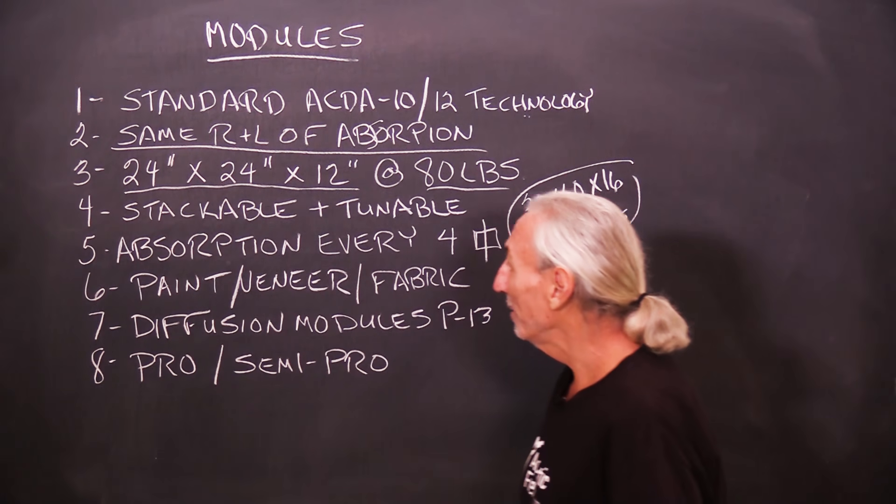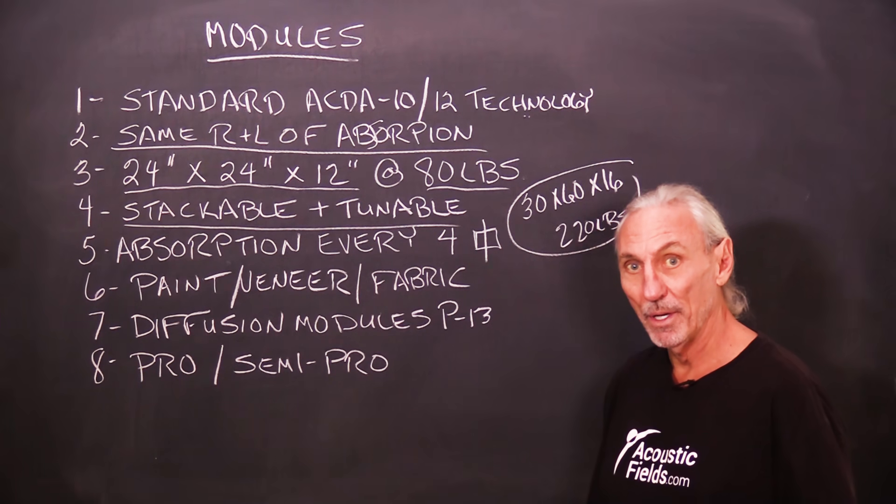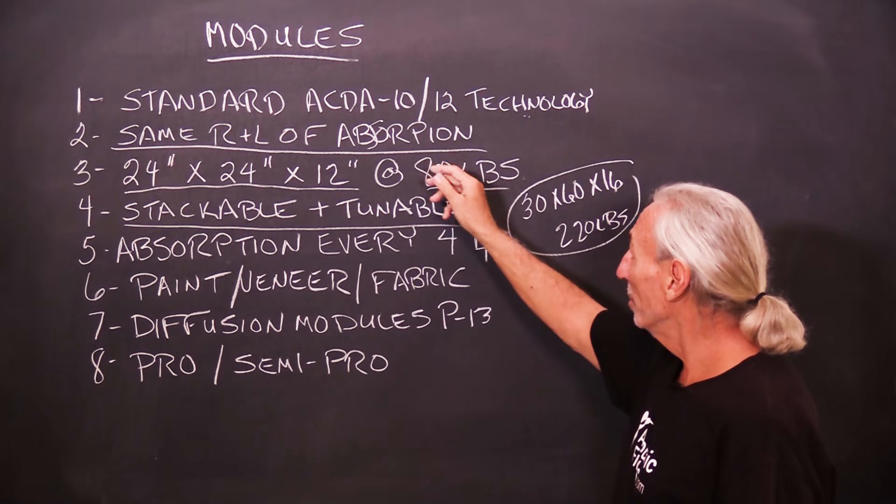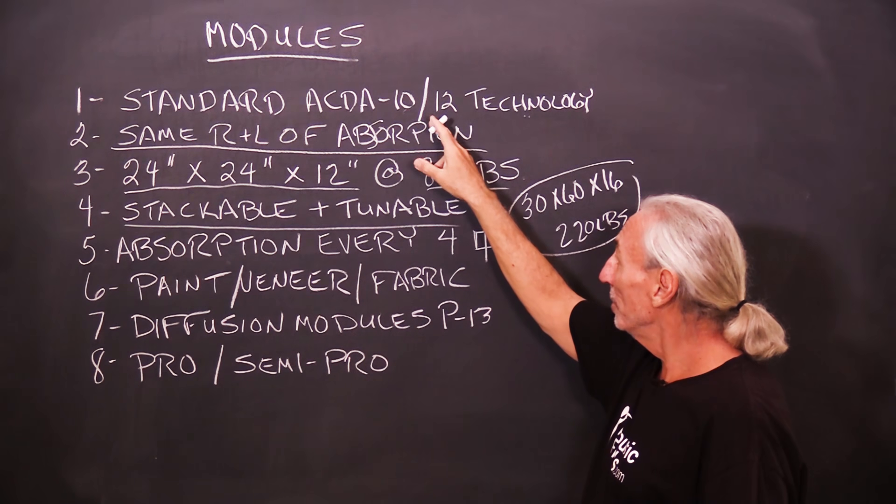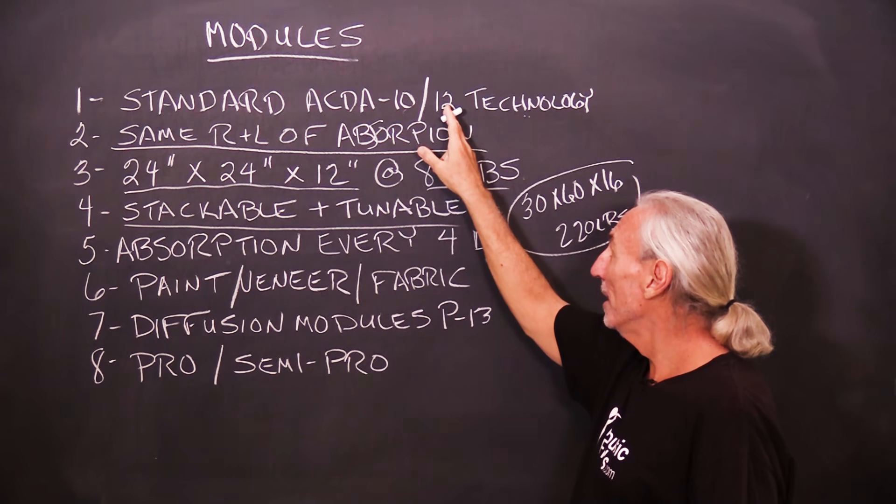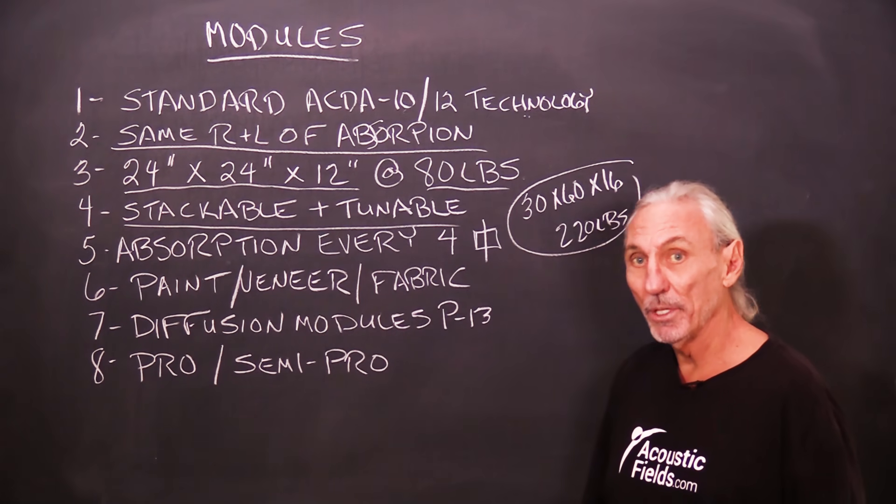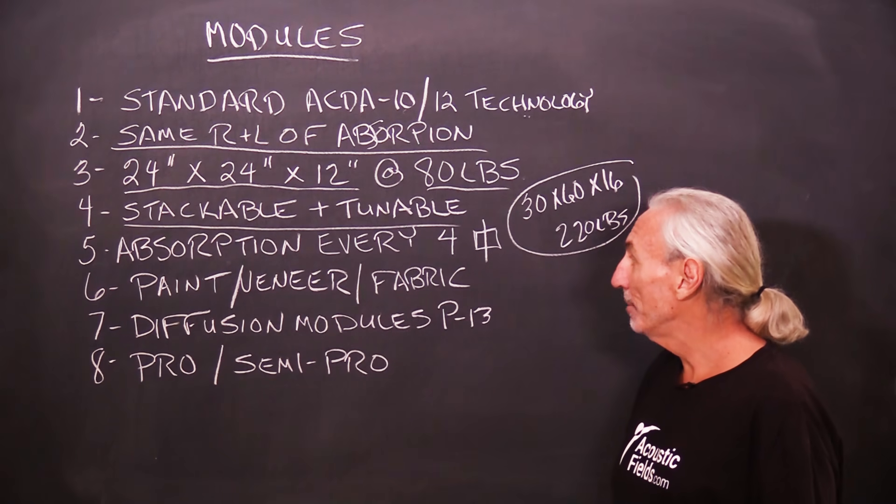So the nice thing about these modules is that they're stackable and tunable. So we have two tools. We have the 10 and the 12. The 10 is broadband from 30 to 300 on the low side. And then the 12 is really powerful. That's our big sponge from 30 to 50. And you can see the data on the website.